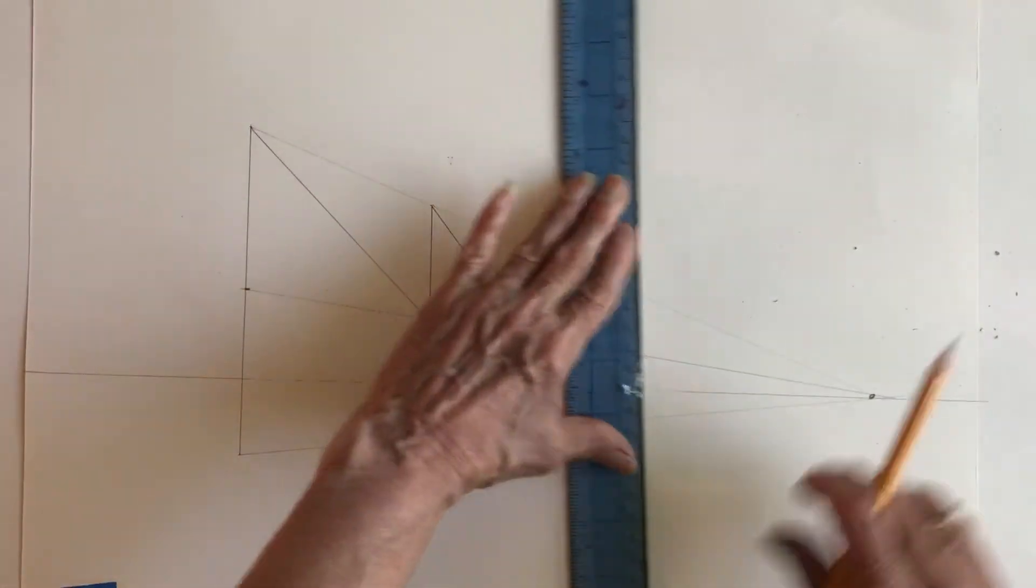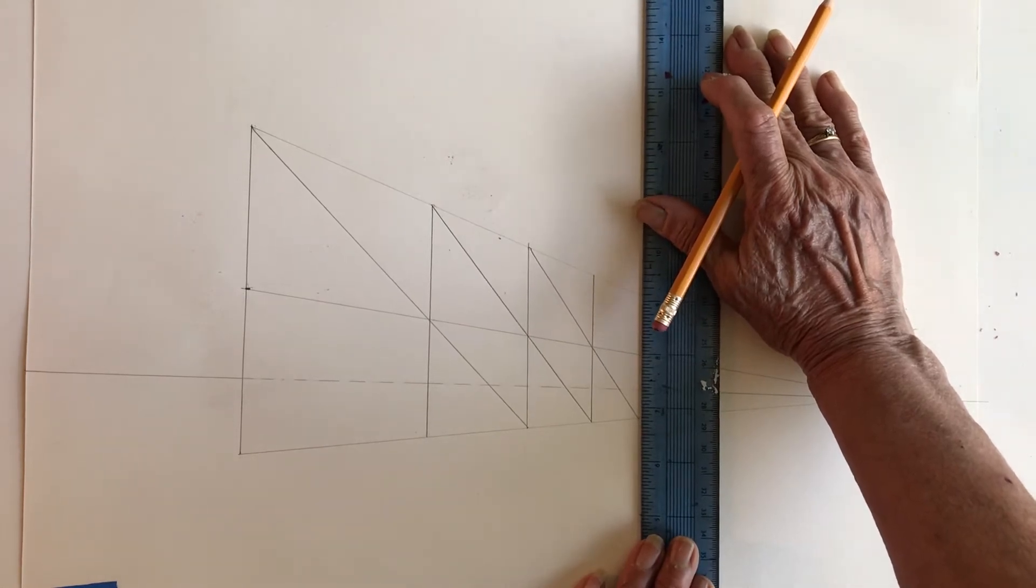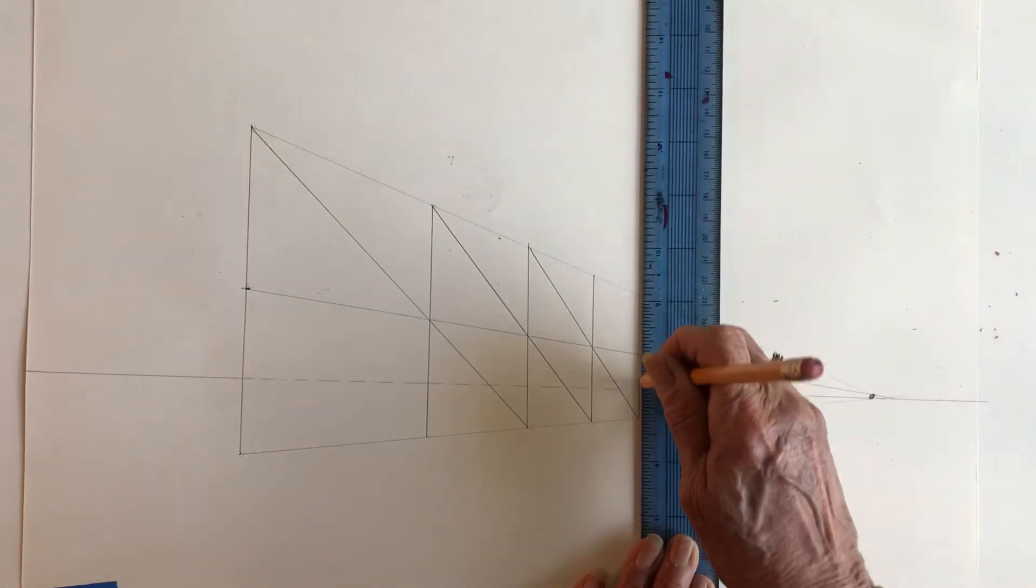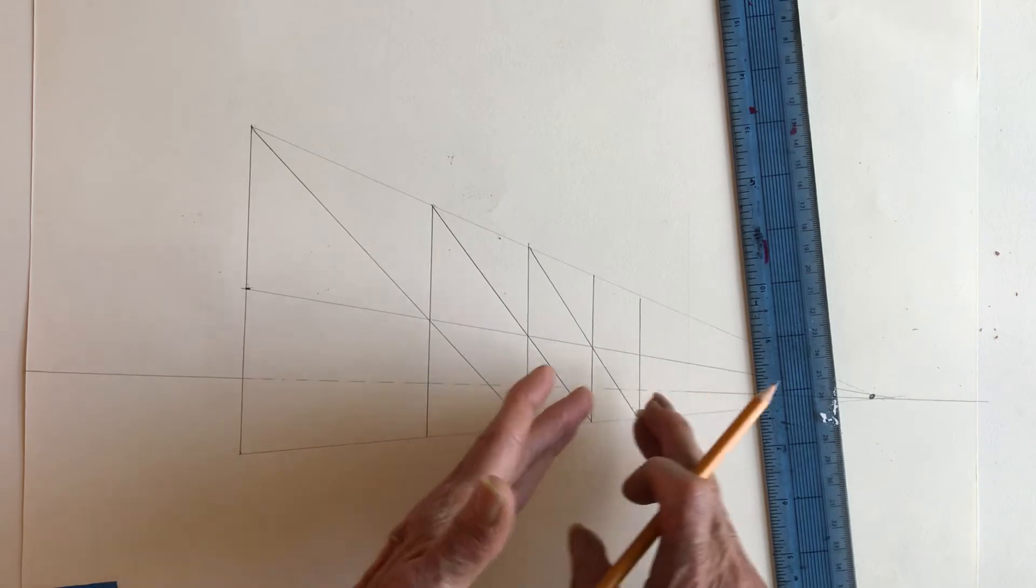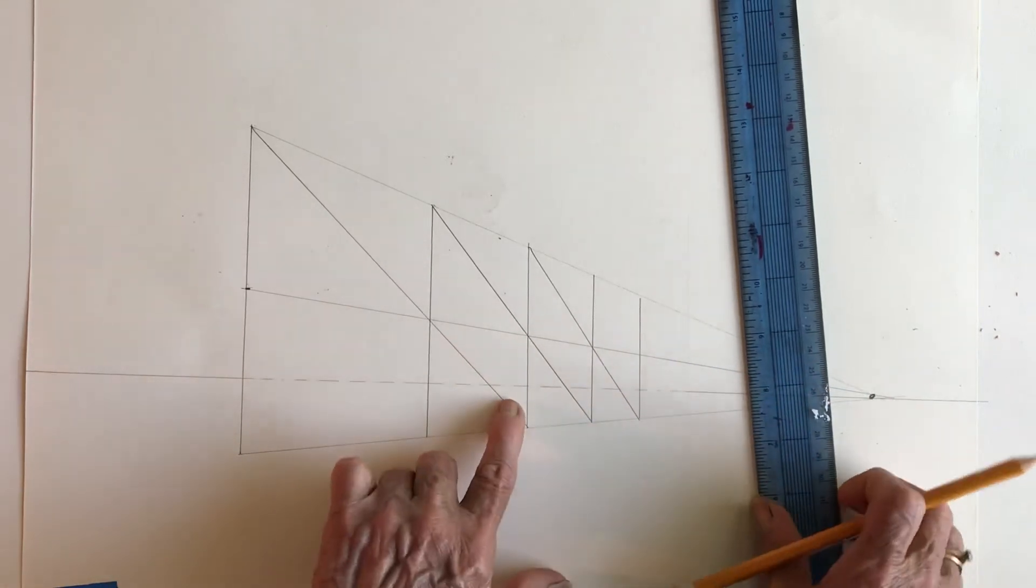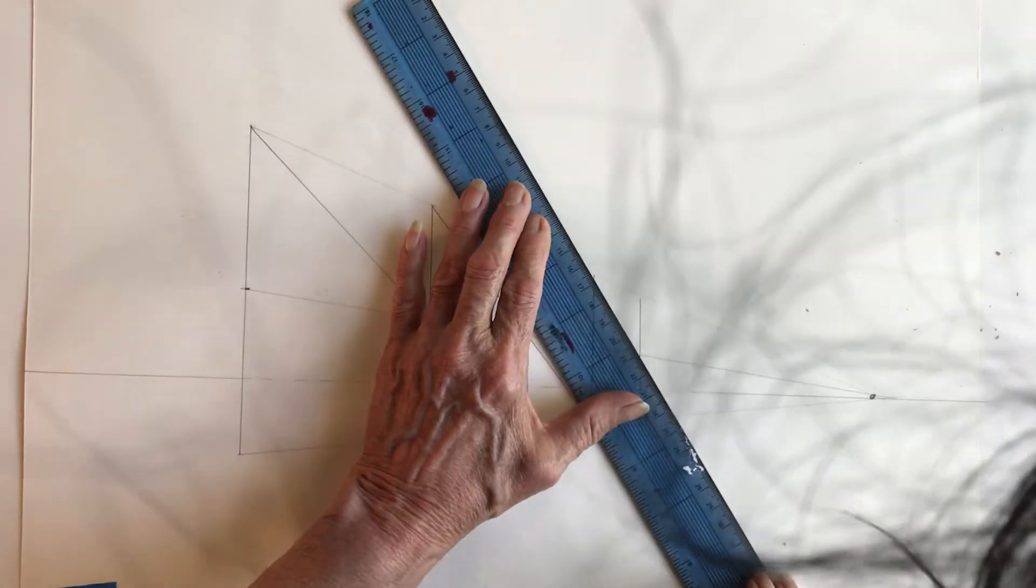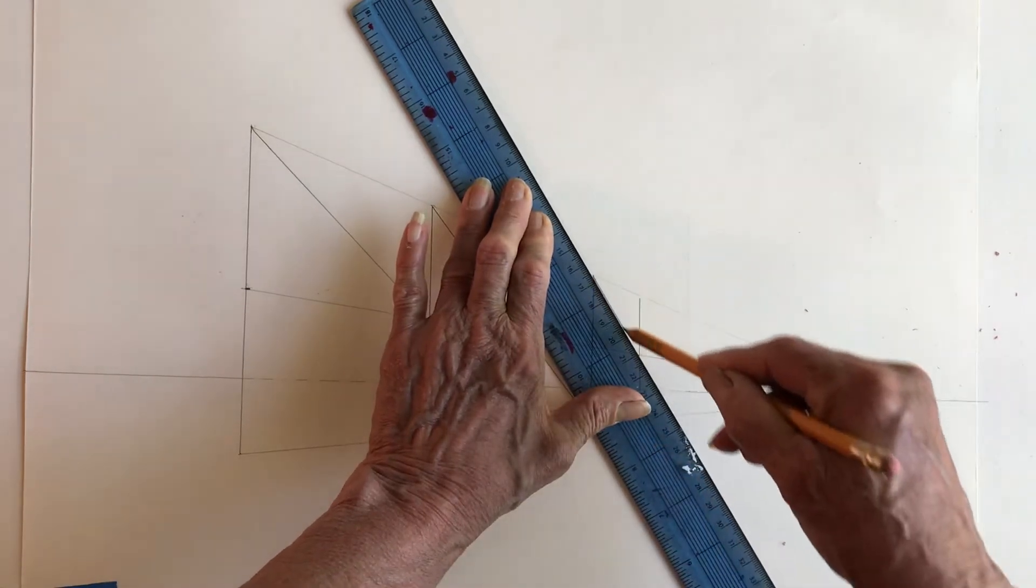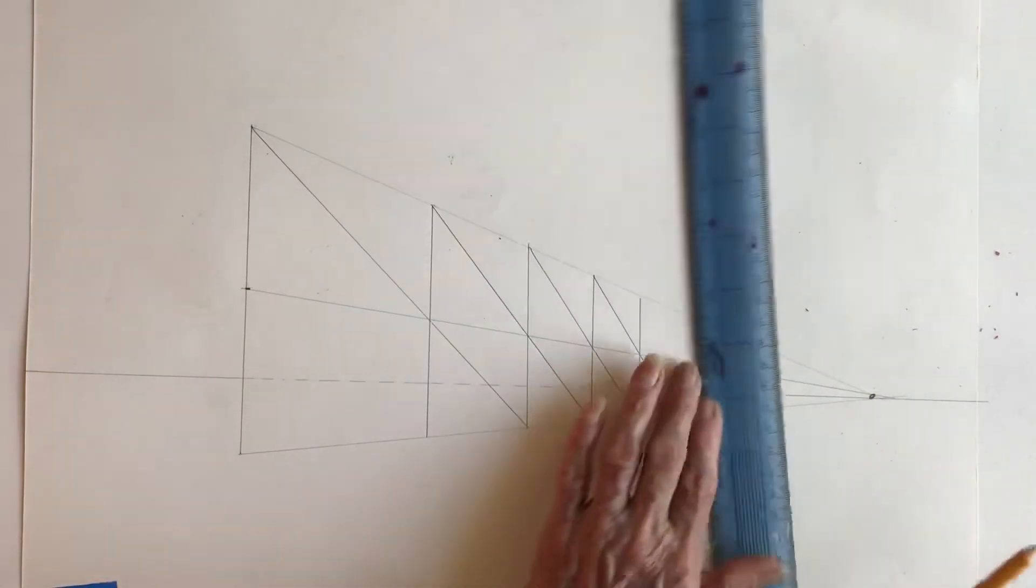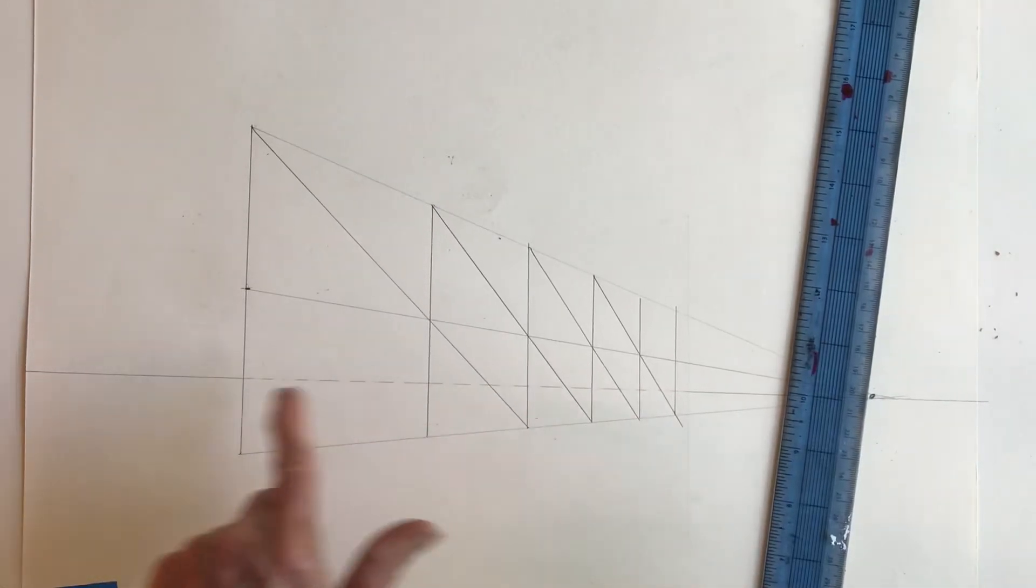So what I'll be looking for is have you used this pattern to establish the receding distance of each fence post. And you need to include a minimum of eight fence posts in your drawing. So right now, with this one that I've drawn here, I have one, two, three, four, five, six.